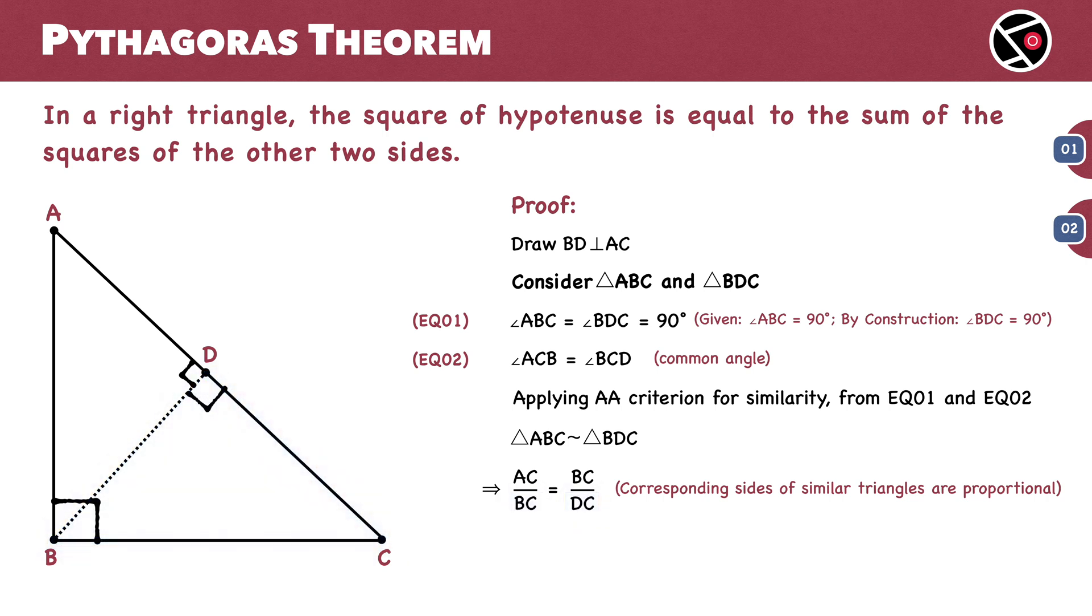Let's proceed further and cross multiply both sides of this equation. We get AC times DC equals BC squared. This is equation 3.